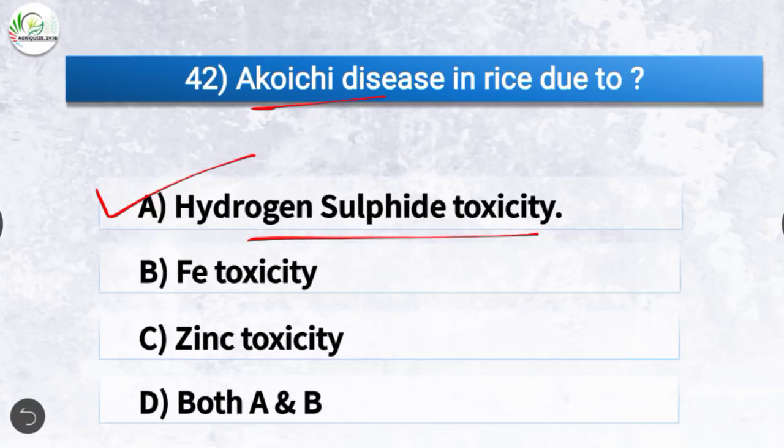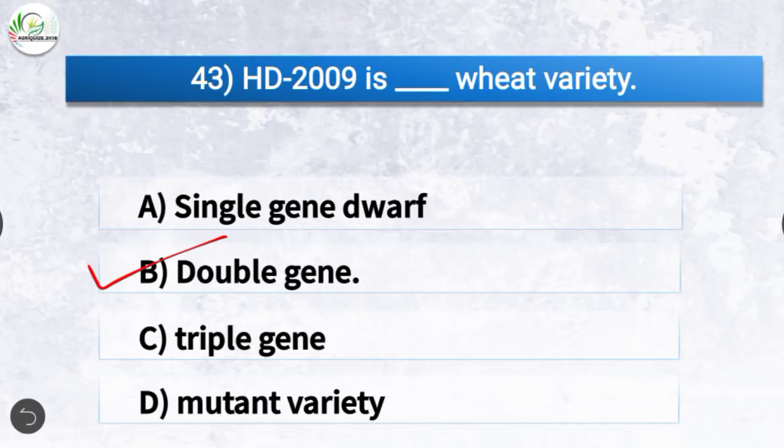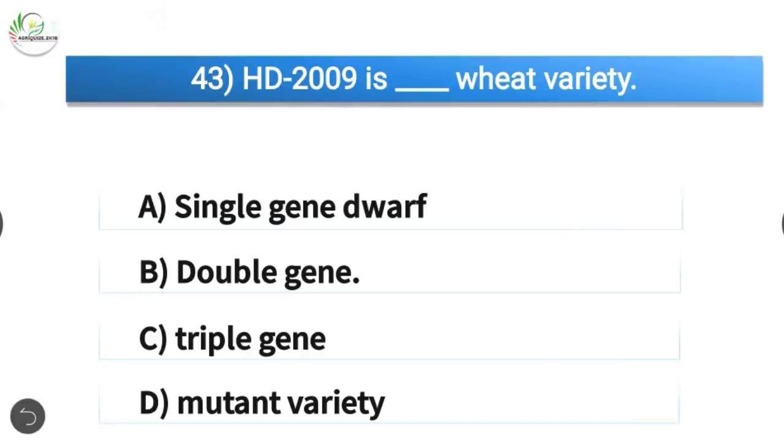Question number 43: HD 2009 is a dash wheat variety. The correct answer is option B, double gene. HD 2009 is a double gene wheat variety.